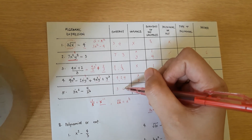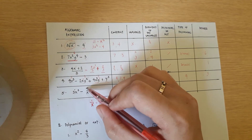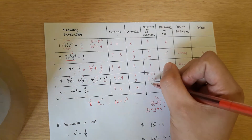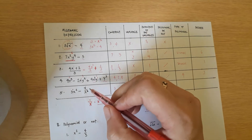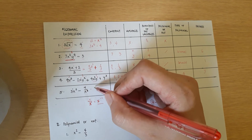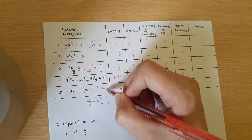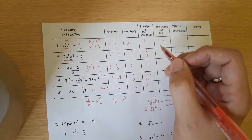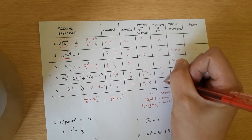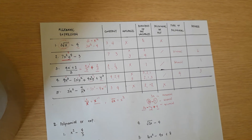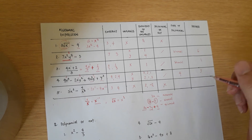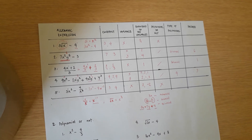For the last expression, the constants are 3 and 4, and the variable is x with exponents 2 and negative 2. Because there is a variable in the denominator, you can write it as 3x² − 4x^(−2). Since there is a negative exponent, this is not a polynomial, so we will not identify the type or degree.